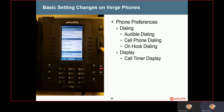Our next section in phone preferences is dialing. The first option here is audible dialing, which means you're going to hear tones when you're pressing keys. This is enabled by default, but if you did not want to have those audible tones whenever you're dialing, you could disable that.